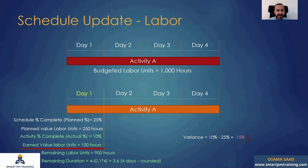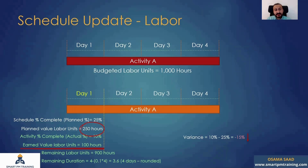The budget labor units are calculated based on duration and number of resources. What if your plan is 10 laborers, but you had 15 on site? You might think you're on track, but maybe you didn't hire skilled laborers, there's lack of supervision, or laborers aren't achieving the required productivity. It can happen that although the planned manpower is 10 and you assigned 15, you are still in delay. So the actual manpower doesn't factor into the earned value model.